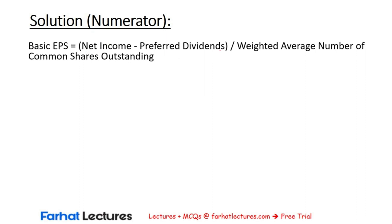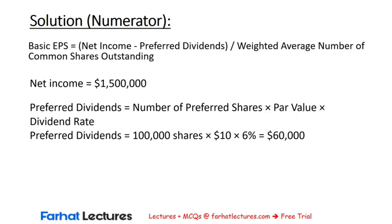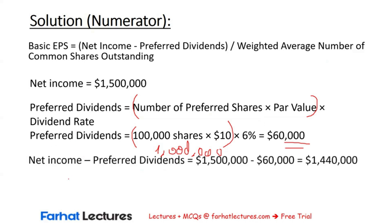The formula is net income minus preferred dividends divided by the WACSO. In our numerator, we have net income of $1,500,000. For preferred dividends, we compute it as the number of preferred shares multiplied by the par value multiplied by the dividend rate. We have 100,000 shares multiplied by the par value of $10, which is $1,000,000. Multiply $1,000,000 by 6% and you get $60,000 — these are our preferred dividends. Our numerator is $1,500,000 minus $60,000, which equals $1,440,000.